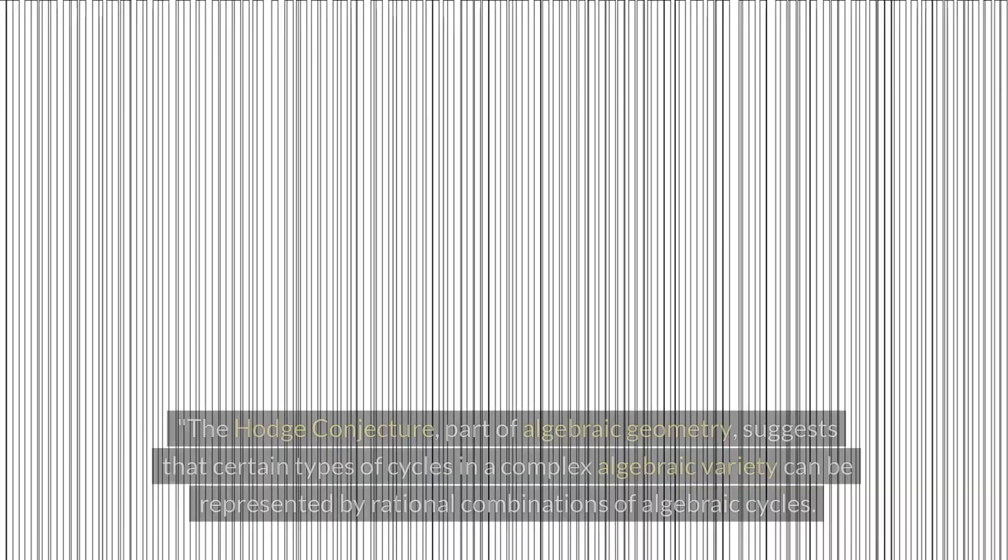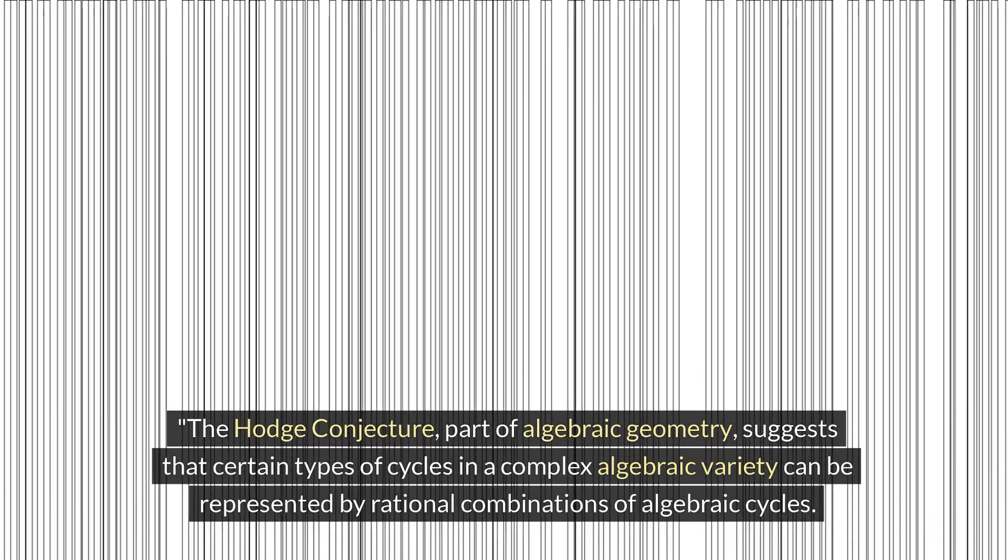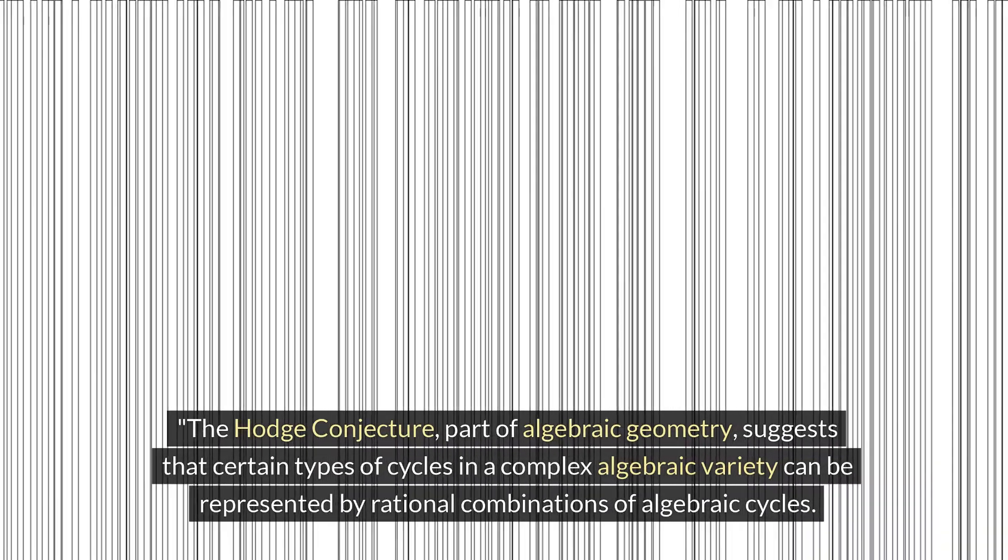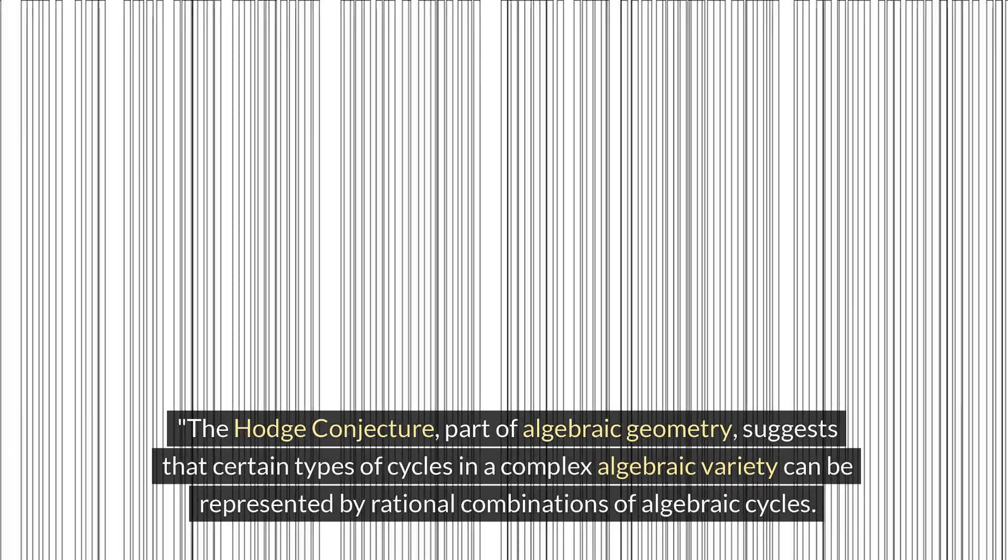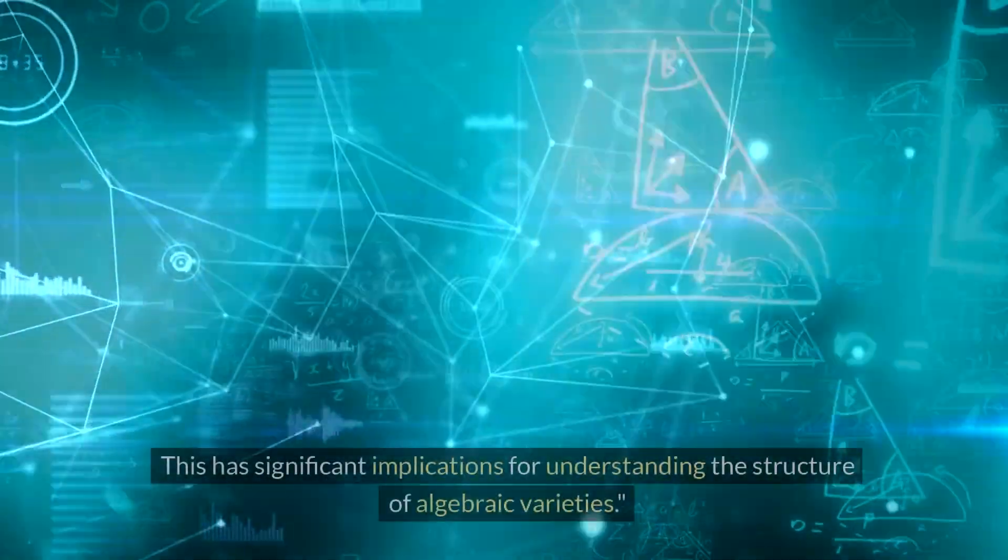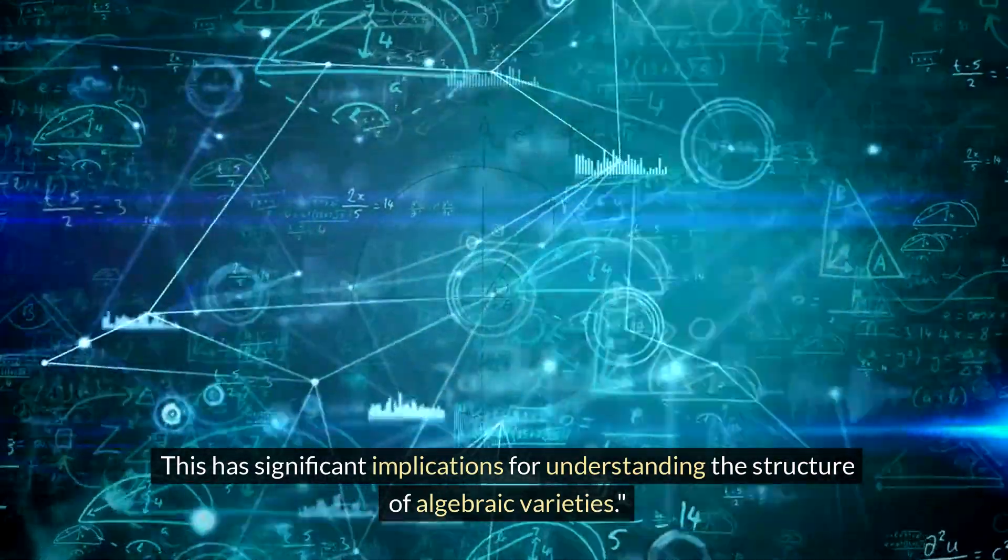The Hodge Conjecture, part of algebraic geometry, suggests that certain types of cycles in a complex algebraic variety can be represented by rational combinations of algebraic cycles. This has significant implications for understanding the structure of algebraic varieties.